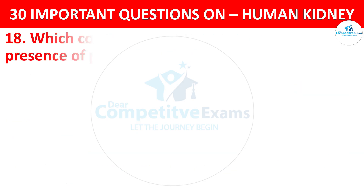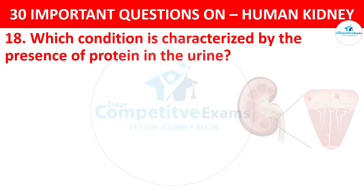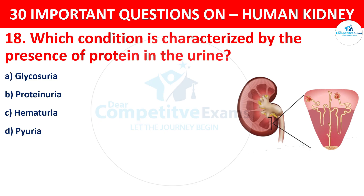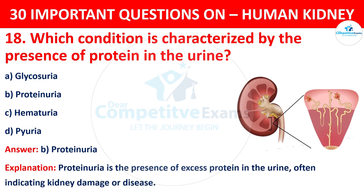Question 18. Which condition is characterized by the presence of protein in the urine? The options are: Glycosuria, Proteinuria, Hematuria, or Pyuria. The correct answer is B, i.e. Proteinuria. Proteinuria is the presence of excess protein in the urine, often indicating kidney damage or disease.